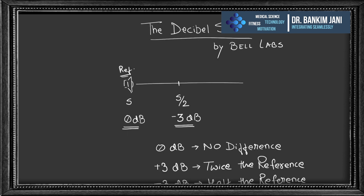Now we talk about an important principle: the decibel scale, given by Bell Labs. When signal strength decreases to half from a reference point, that is minus 3 dB; when it doubles, it is plus 3 dB. So 0 dB means no difference, plus 3 dB means twice the power, minus 3 dB means half the power.